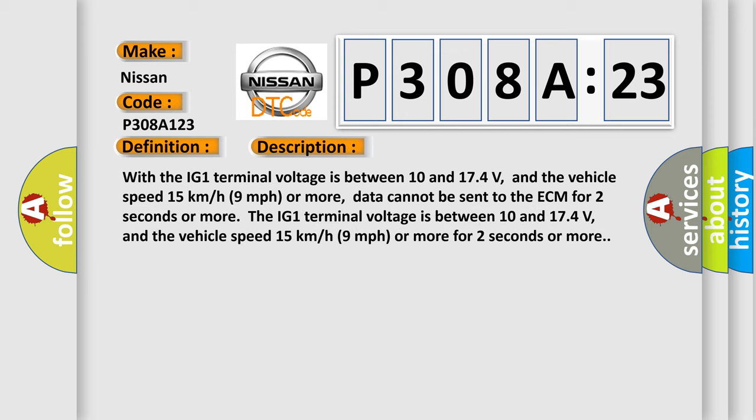With the IG-1 terminal voltage between 10 and 17.4 volts, and the vehicle speed at 15 km/h (9 mph) or more, data cannot be sent to the ECM for 2 seconds or more.